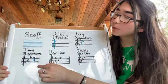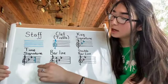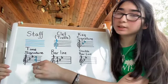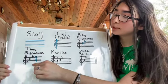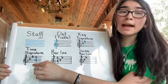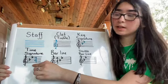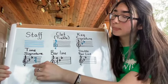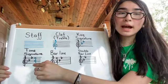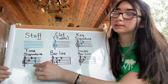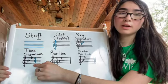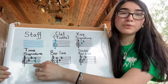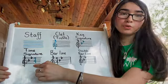Next, we have the time signature. The time signature comes after the key sign. The time signature tells us how many beats are in a measure and which note gets the beat. Right here, we have a common 4-4 time signature. Other time signatures we're going to learn are 3-4 and 2-4.